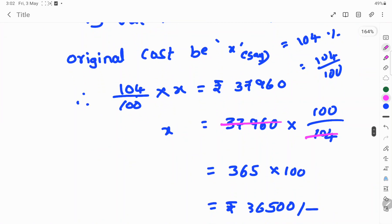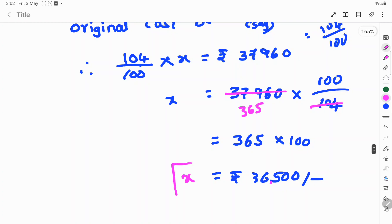This 104 cancels in 37,960 in 365 times. So, 365 into 100 is nothing but 36,500 rupees x value. This is the solution.